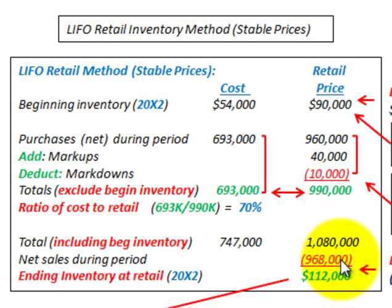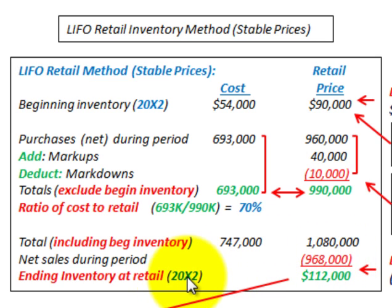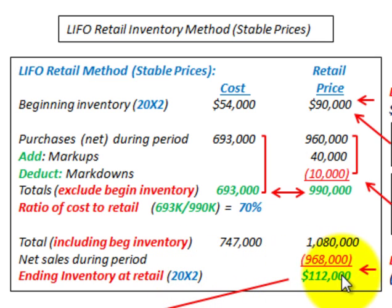Then we have our net sales for the period, which we subtract. In this case, it was $968,000. So we come up with our ending inventory at retail of $112,000.